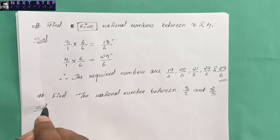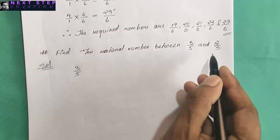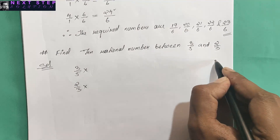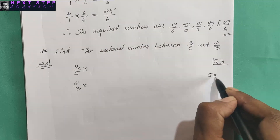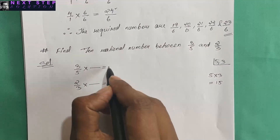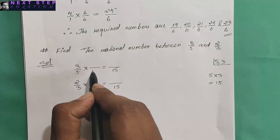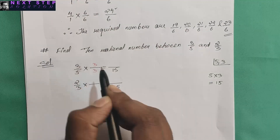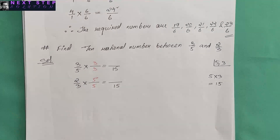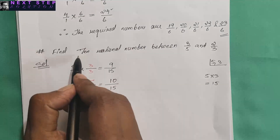To solve this, first we need to make the denominators the same. Take the LCM of the denominators 5 and 3. Nothing is common, so we multiply: 5 times 3 is 15. To make 5 into 15 we multiply by 3, so the numerator 3 also becomes 9. To make 3 into 15 we multiply by 5, so the numerator 2 becomes 10. So we have 9 by 15 and 10 by 15.